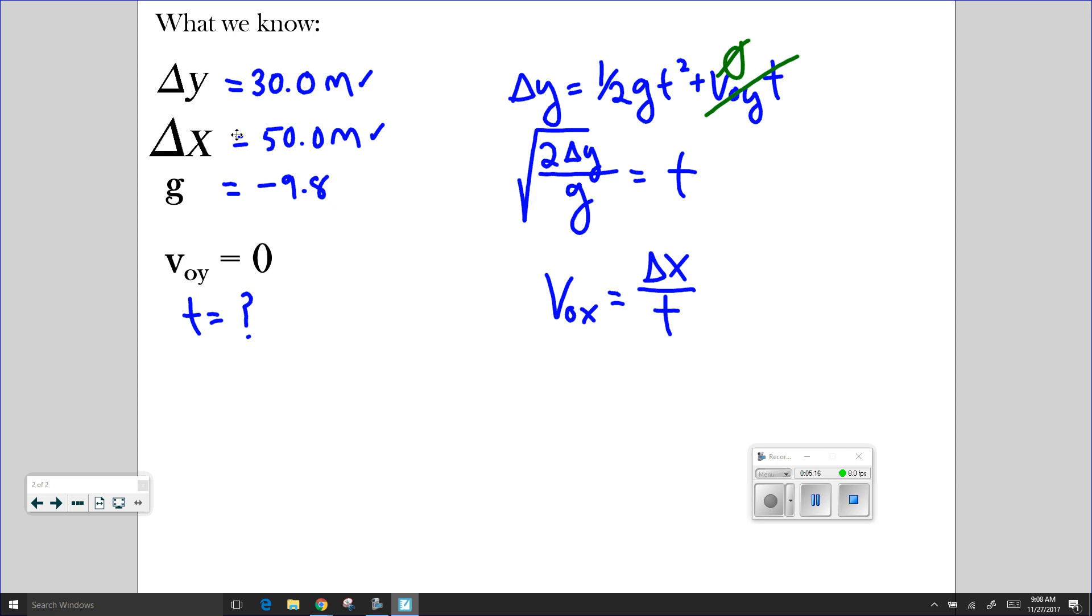So now what I can go ahead and do is realize that I have two variables in common. Time here and time here. And I'm going to substitute this first time equation into the constant velocity equation. And that's going to allow me to solve for the initial velocity in the x direction.